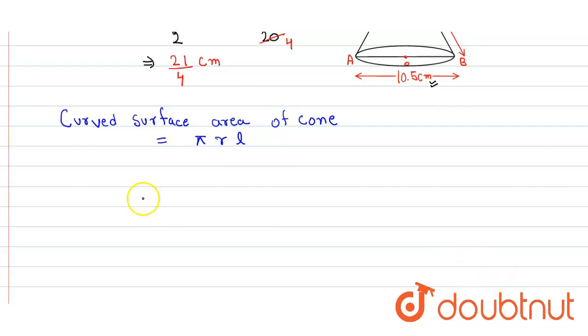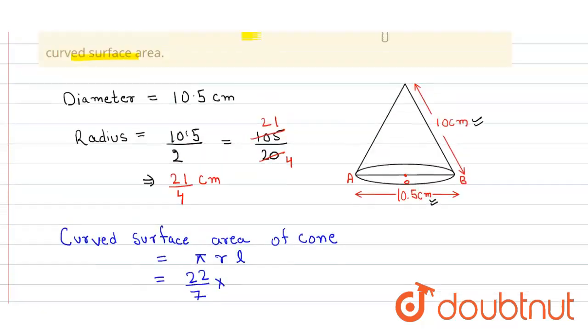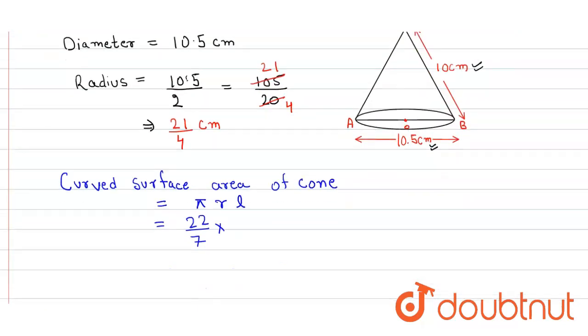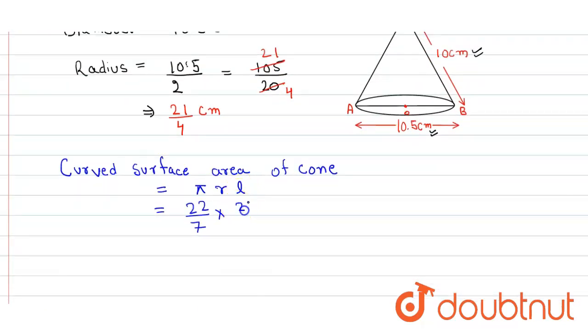We write it as 22 upon 7 into 21 upon 4 into slant height 10.